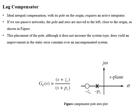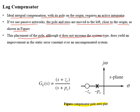The ideal integral compensation with its pole on the origin requires an active integrator. If we use passive networks, the pole and zeros are moved to the left, close to the origin, as shown in the figure. This placement of the pole, although it doesn't increase the type of the system, gives us improvement in the static error constant over an uncompensated system.